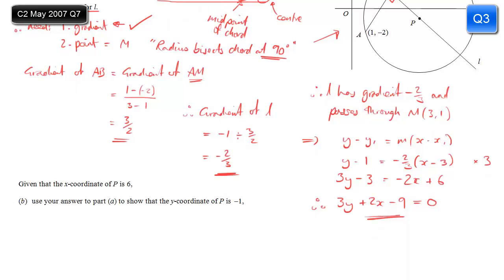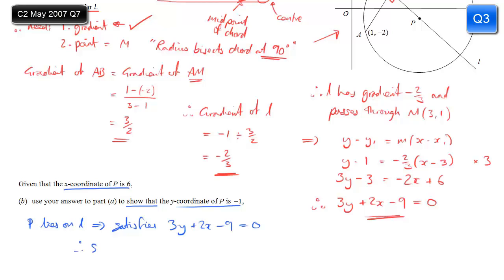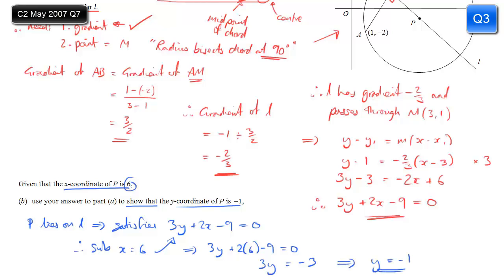Part B asks us to use our answer to show that the y-coordinate of P is minus 1, given that the x-coordinate is 6. Since P lies on line L, it must satisfy 3y plus 2x minus 9 equals 0. Substituting x equals 6: 3y plus 12 minus 9 equals 0, so 3y equals minus 3, giving y equals minus 1, as required.